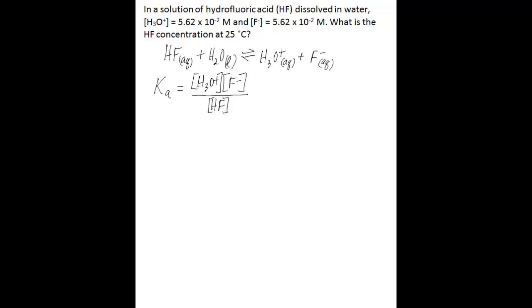So we know the fluoride ion concentration because we're given that. We know the hydronium ion concentration. We're given that as well. We can look up Ka in a table of acid dissociation constants at 25 degrees Celsius. And when we do that, we find that Ka is 3.5 times 10 to the negative 4.